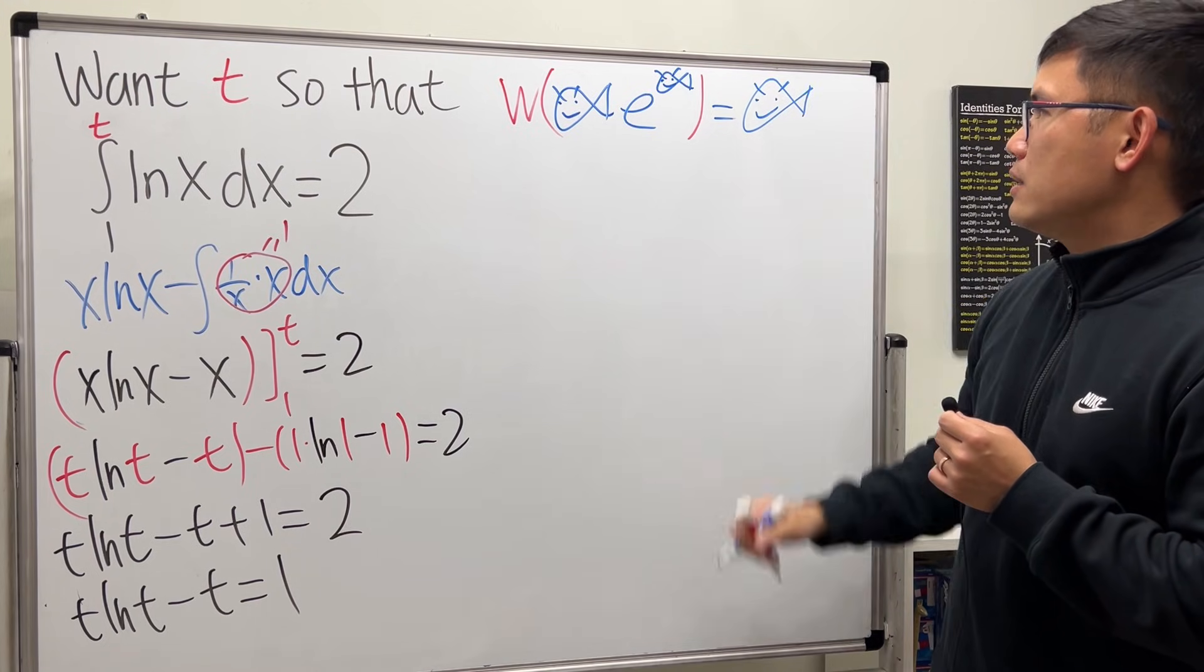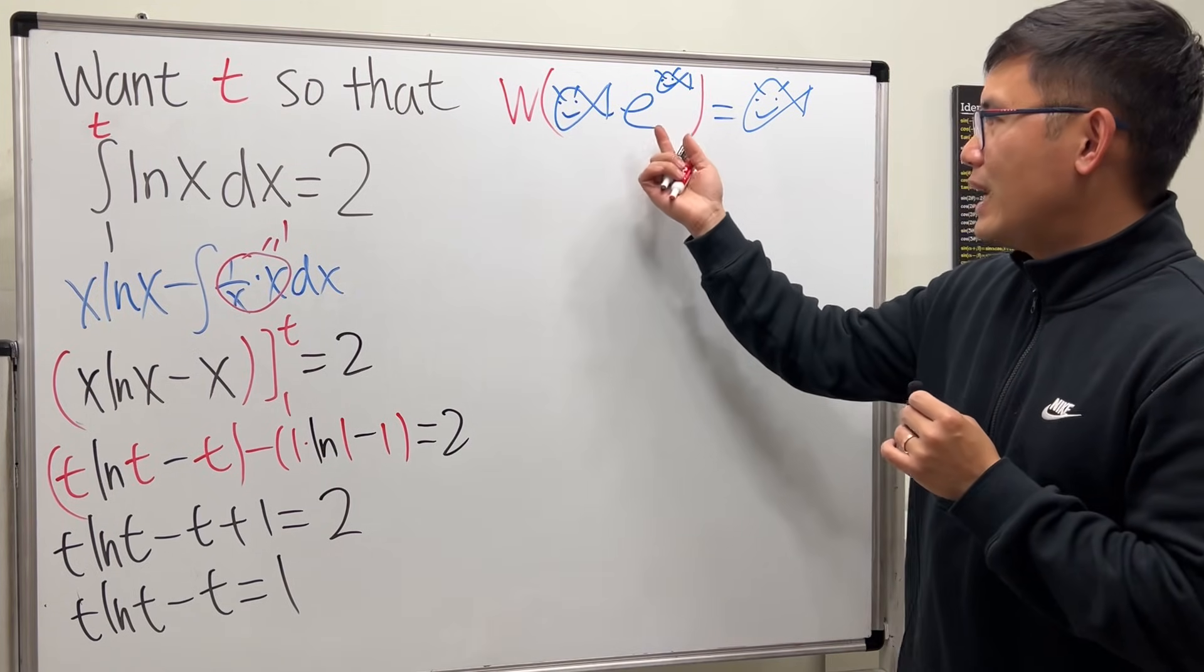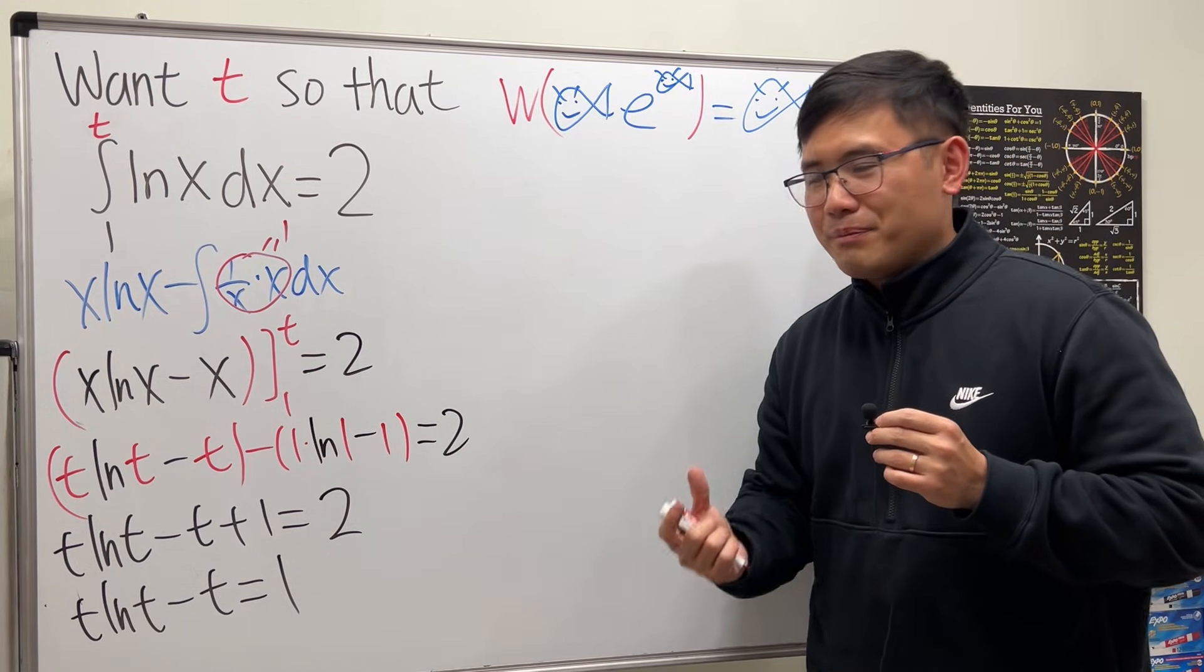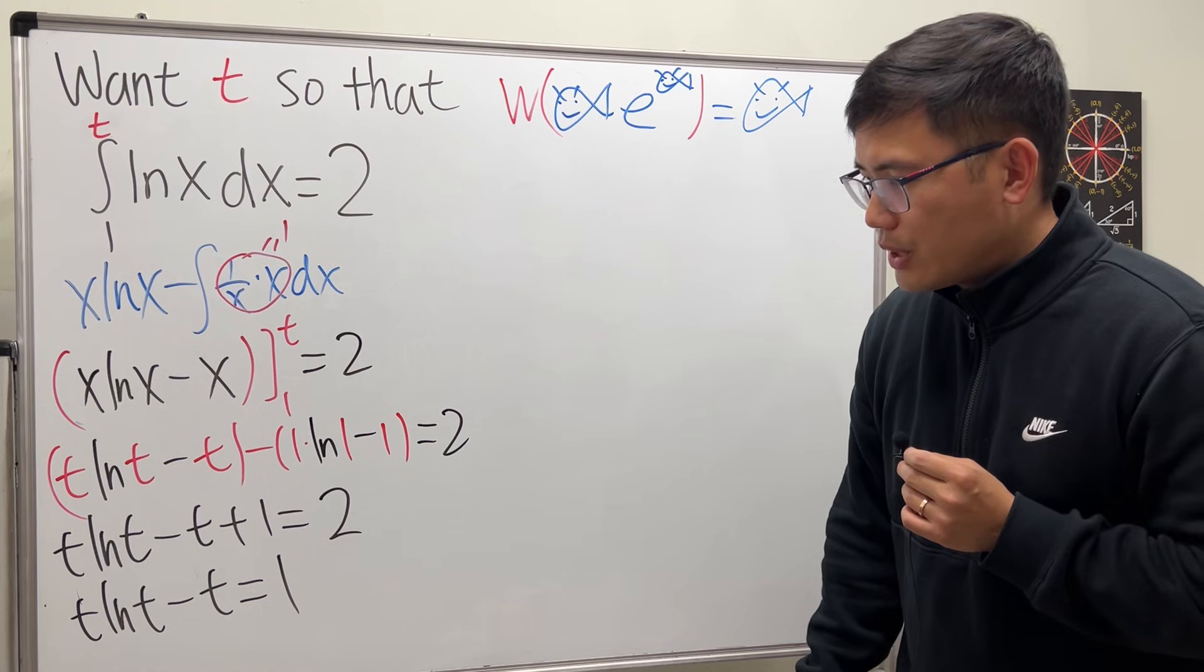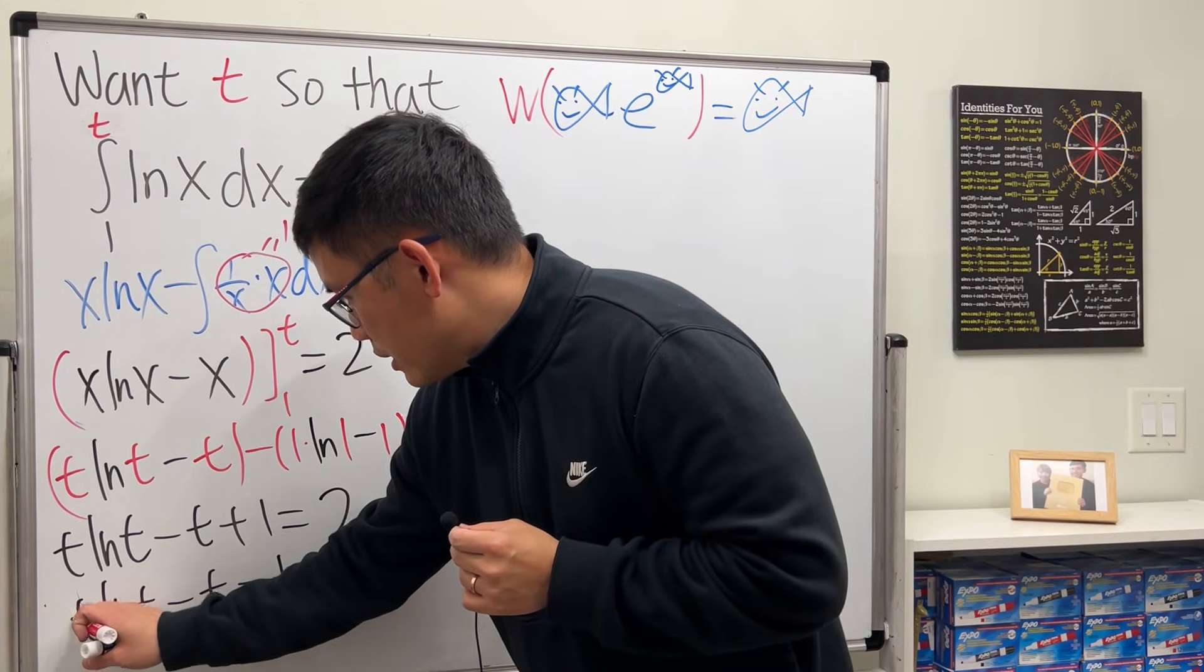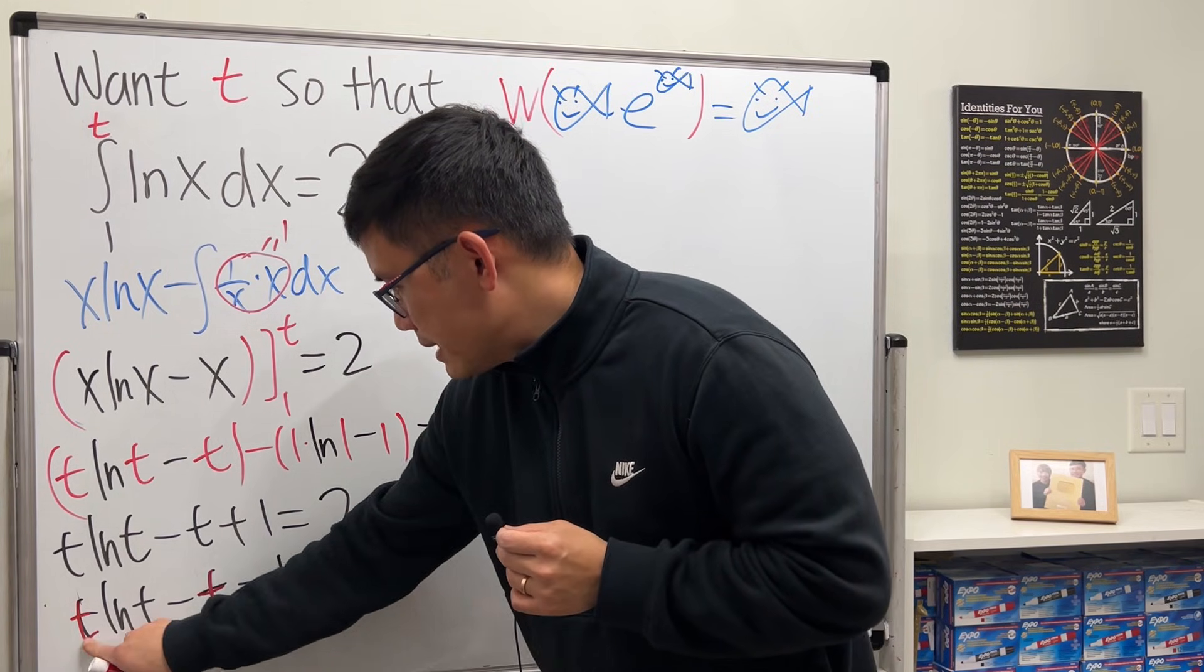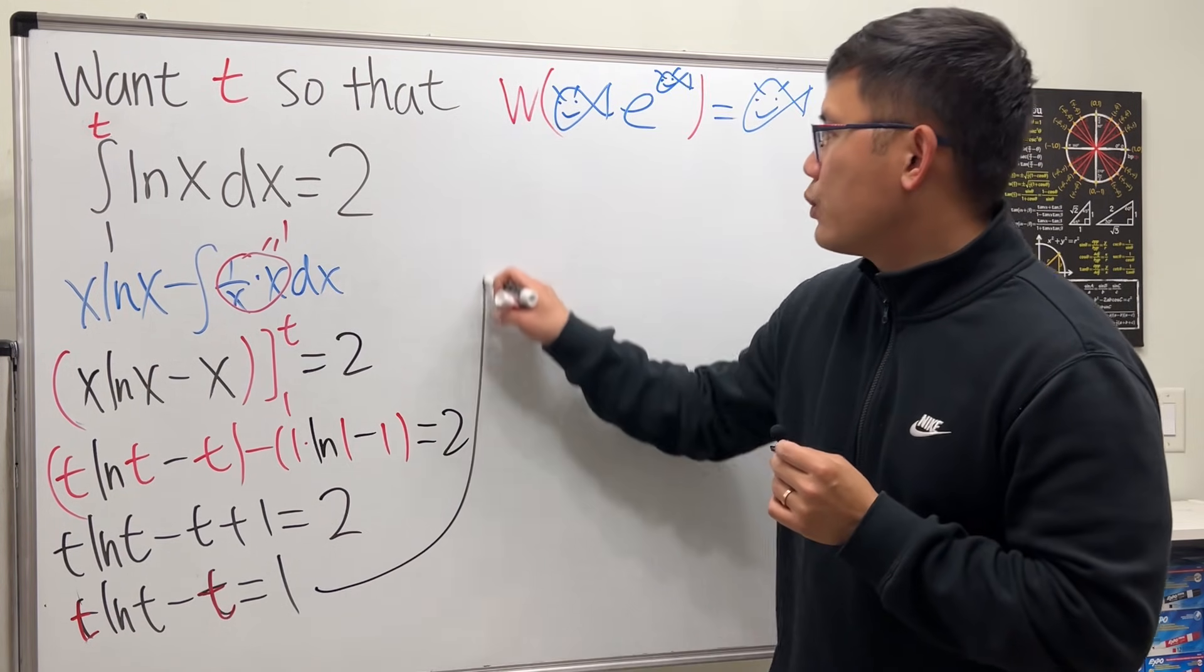So in order for us to use that though, of course we have to have the number e for the base. So how can we make that happen though? Check this out. Have a look here. We have this t here, we have this t, so perhaps let's just factor out that t.